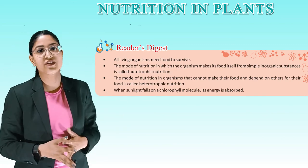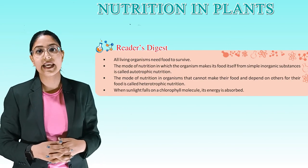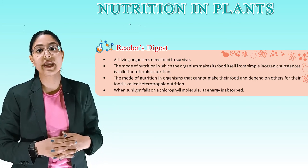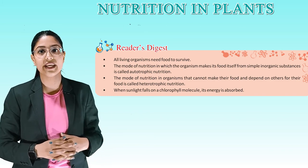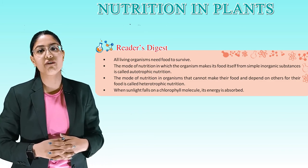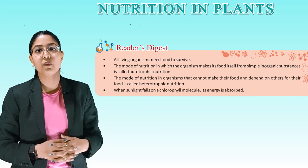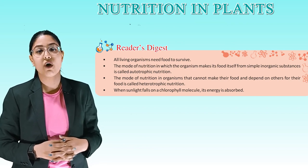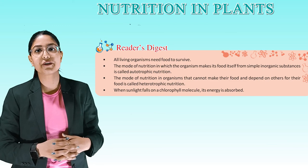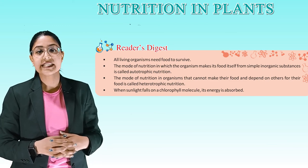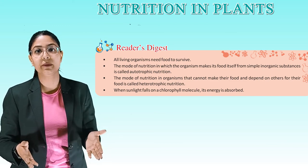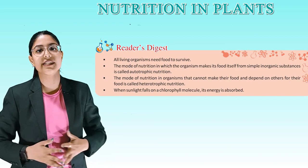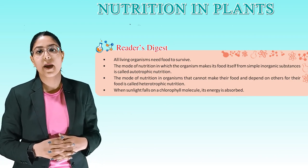Let's quickly revise with a Reader's Digest. All living organisms need food to survive. The mode of nutrition in which the organism makes its food itself from simple inorganic substances is called autotrophic nutrition. The mode of nutrition in organisms that cannot make their food and depend on others for their food is called heterotrophic nutrition. When sunlight falls on a chlorophyll molecule, its energy is absorbed. Okay class, we have completed our chapter. Bye bye!